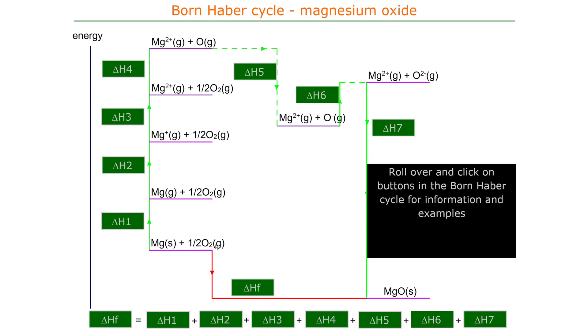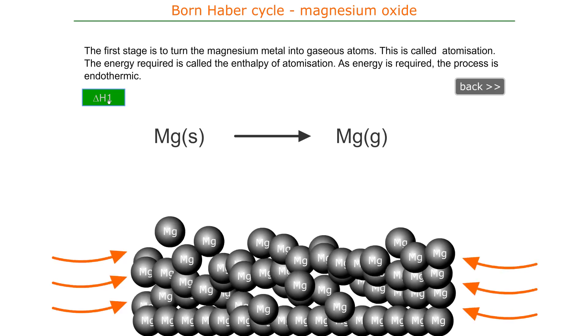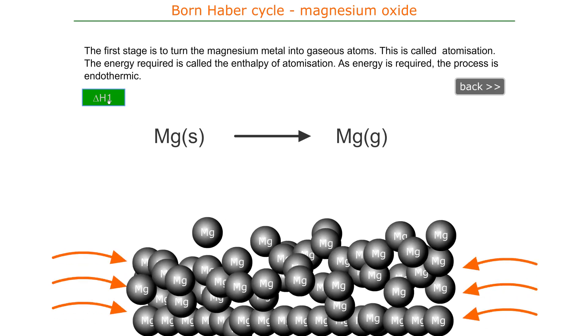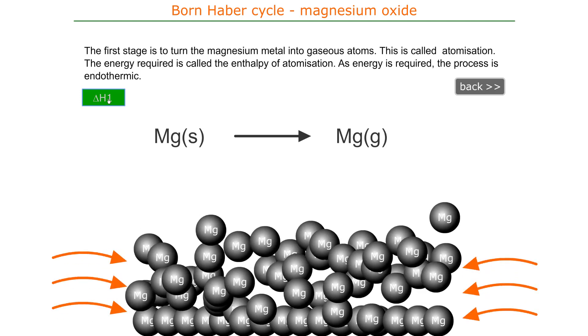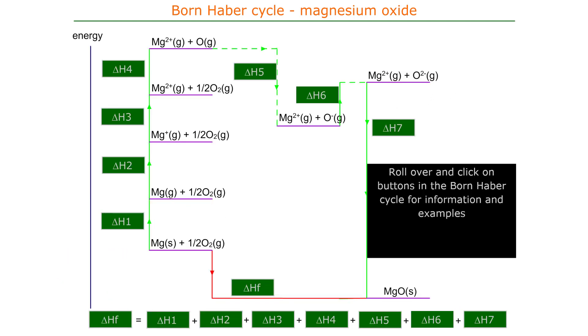Starting with half O2 gas, first we change the magnesium solid into magnesium gas. This is the enthalpy of atomization, which requires that we break up all the magnesium atoms bonded together in the metallic structure to make gaseous magnesium. That process gives us magnesium gas plus half O2 gas.